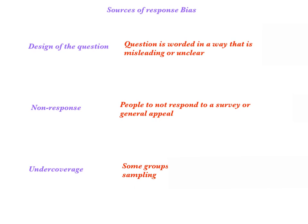Another source is what's called undercoverage — some groups just naturally might be excluded while you're sampling. For example, if you were sampling United States households about a certain issue, anyone who doesn't own a home would not be sampled automatically because of the type of sample you decided to do. So the design of the question or its wording, non-response or people not responding to your question, and undercoverage or excluding a certain group are all sources of response bias for sampling methods.